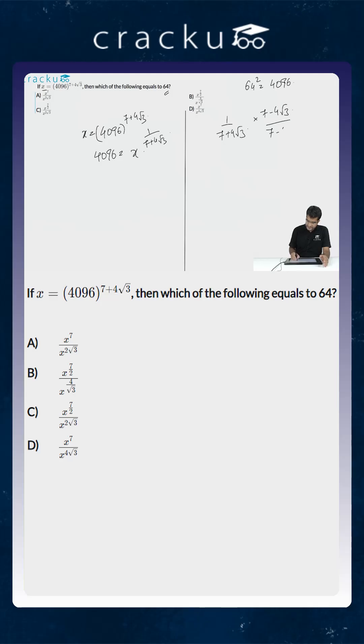The denominator that is 7 plus 4 square root of 3 into 7 minus 4 square root of 3 will become equal to 7 square minus 4 square root of 3 whole square. 7 square is equal to 49 and 4 square is 16 into 3 is equal to 48. So this becomes equal to 1 or the denominator is equal to 1.